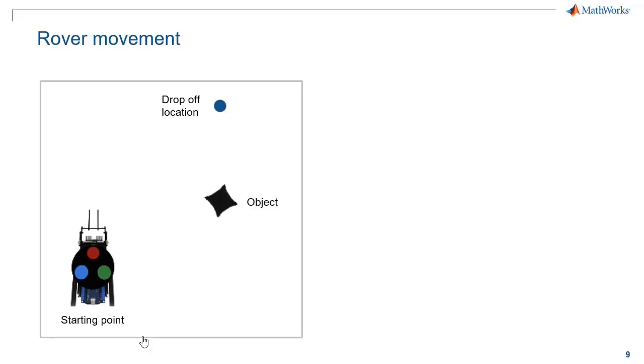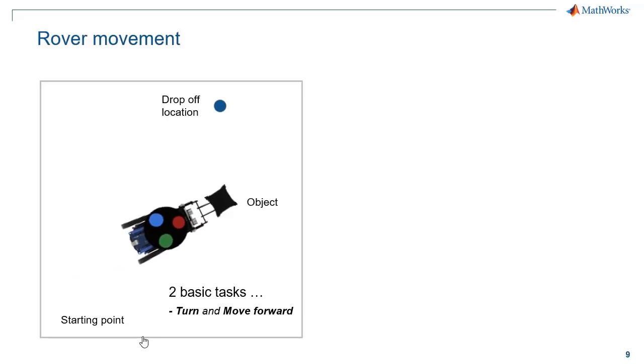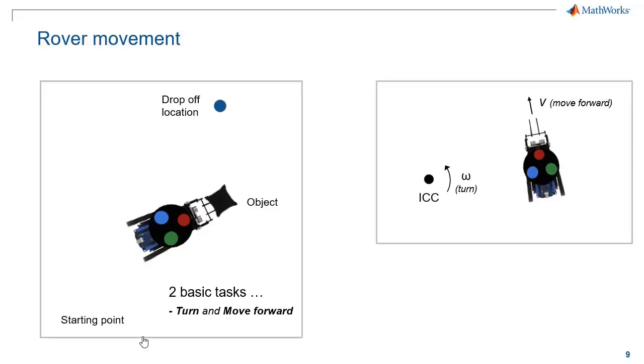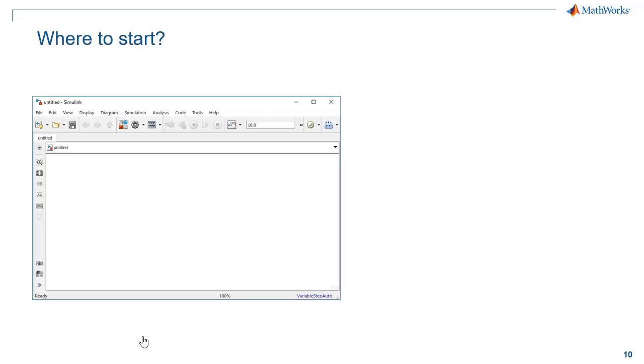So let's say we want to program this rover to move from some starting point to an object, and then from that object to some drop-off location. So if you think about it, there's really two basic tasks that are needed to accomplish this. The rover has to turn and move forward. For example, from the starting point, it would first turn until it's facing the object, and then move forward until it reaches the object. Then it would do the same thing for the drop-off location. Now to instruct the rover to move forward and turn, we have to give as inputs some desired velocity V and rate of rotation omega around this instantaneous center of curvature. And using some pretty basic kinematics, we can then derive the relationship between how fast each wheel needs to spin, so the omega L and omega R, to achieve that desired velocity and rate of rotation. So a pretty basic equation to denote that relationship.